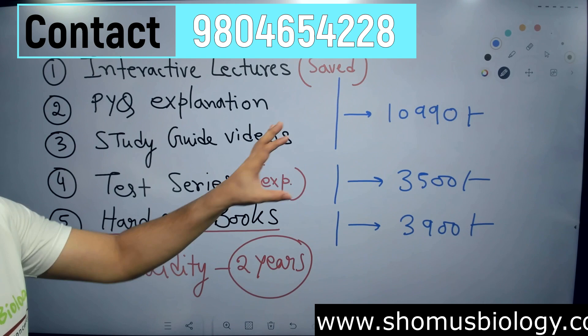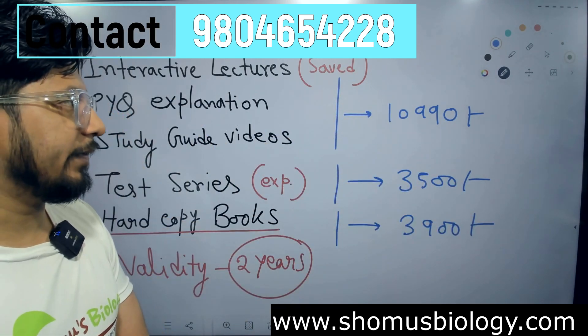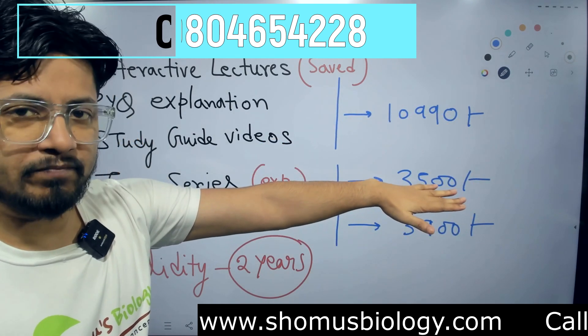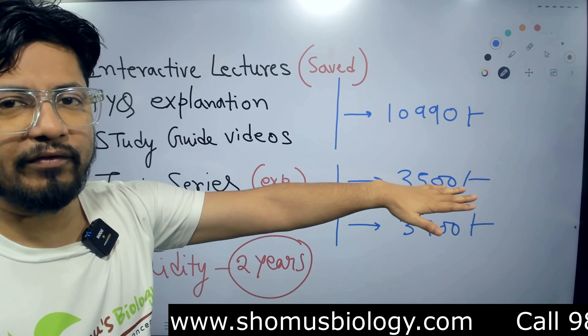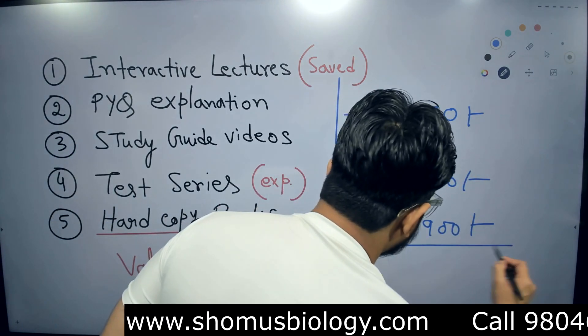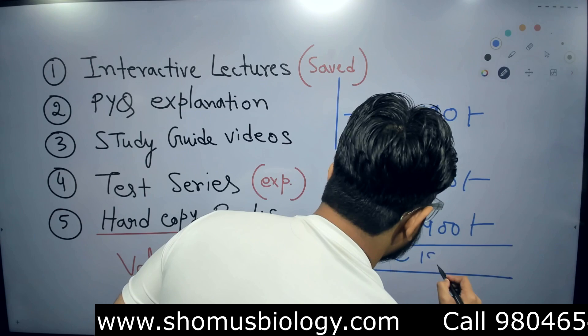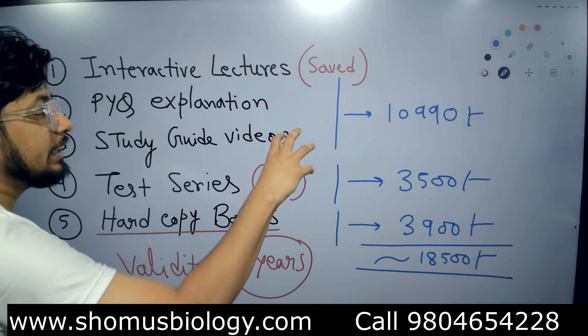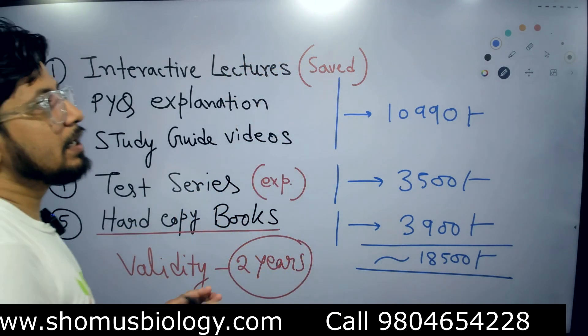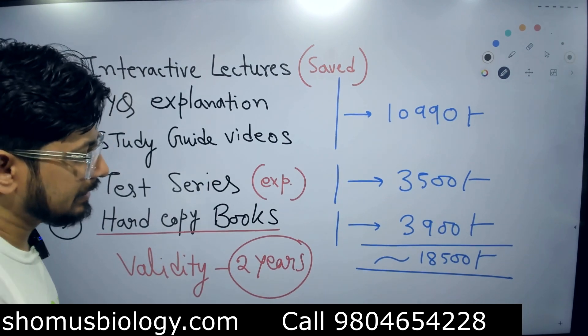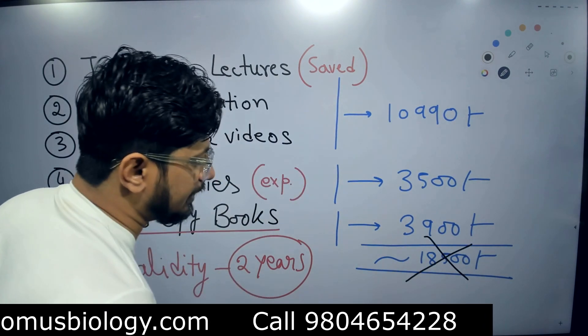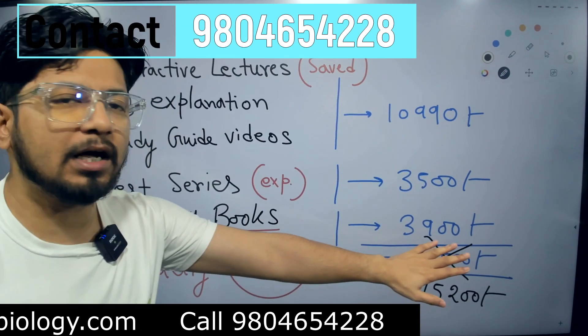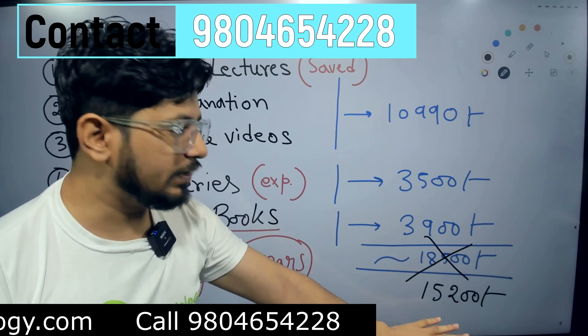So now imagine what is the total amount adding all of them together. That's approximately 11,000 plus 4, 15,000 plus 3, 18,500. So approximately 18,500 rupees is the total cost if you want to buy individual packages separately. But if you join coaching at once, this fee is reduced directly to only 15,200. Instead of 18,500 you only need to pay 15,200.